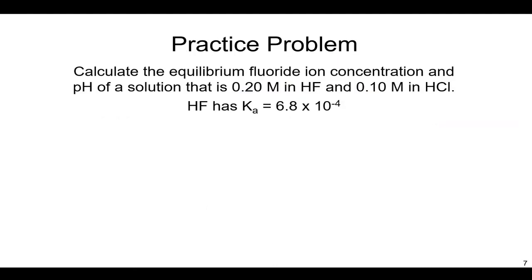So with that in mind, let's take another crack at a practice problem shown here. Feel free to pause the video here and try this one yourself before I go on and solve it. Calculate the equilibrium fluoride ion concentration and pH of a solution that is 0.2 molar in HF and 0.1 molar in HCl. This HF here we realize is a weak acid. The HCl here is a strong acid. So we have a weak electrolyte and a strong electrolyte.